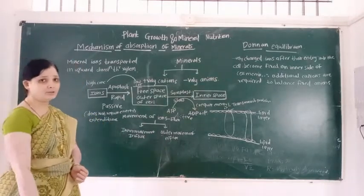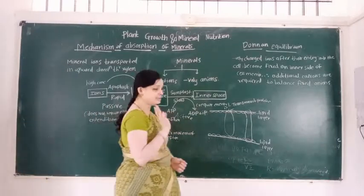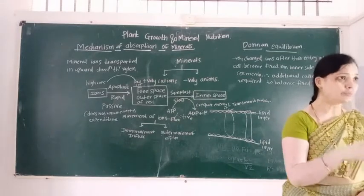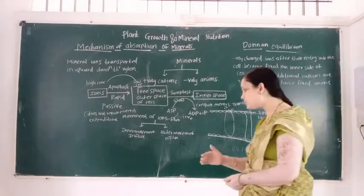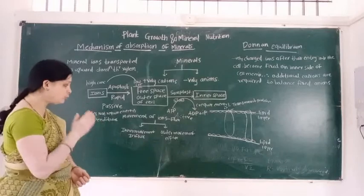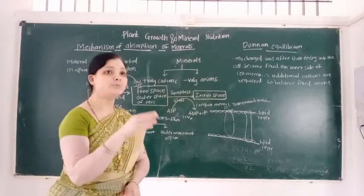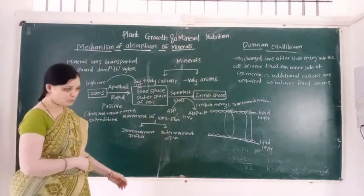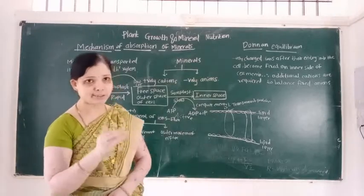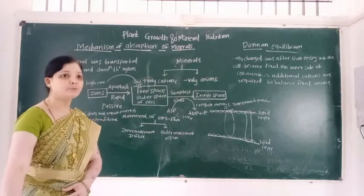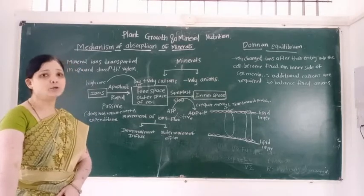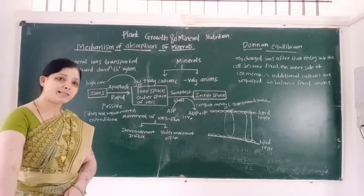Now we learn three terms. The movement of ions is known as flux. When inward movement of ions takes place, it is called influx. When outward movement of ions takes place, it is called efflux. In mineral absorption, the tonoplast and plasma membrane play an important role.